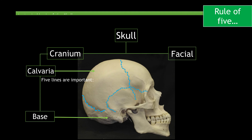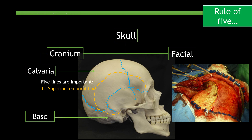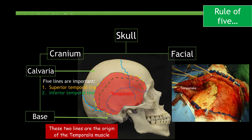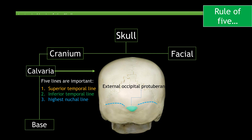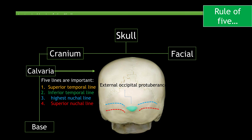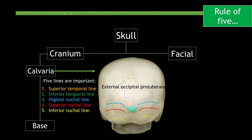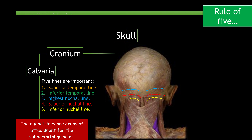There are also five lines in the calvaria that are important: the superior temporal line and the inferior temporal line — it is important to know that these two lines are the origin of the temporalis muscle — the highest nuchal line, the superior nuchal line, and the inferior nuchal line. The nuchal lines are areas of attachment for the suboccipital muscles.